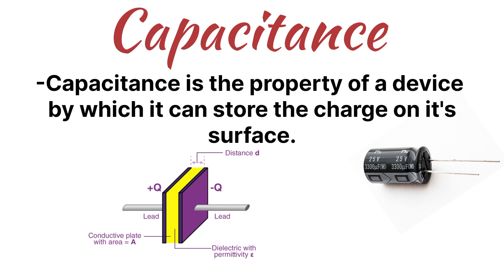If two metal plates are separated by a distance with a dielectric or insulating material in between, that is called a parallel plate capacitor. You can see the parallel plate capacitor in the image, along with its circuit representation. That covers these most important terms frequently used in electrical systems.